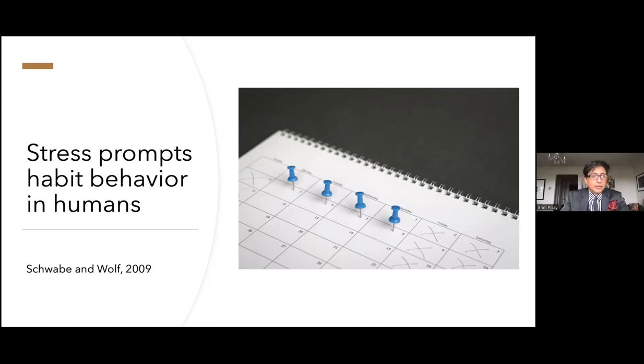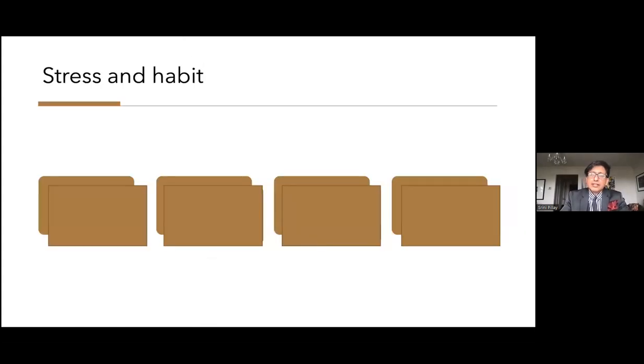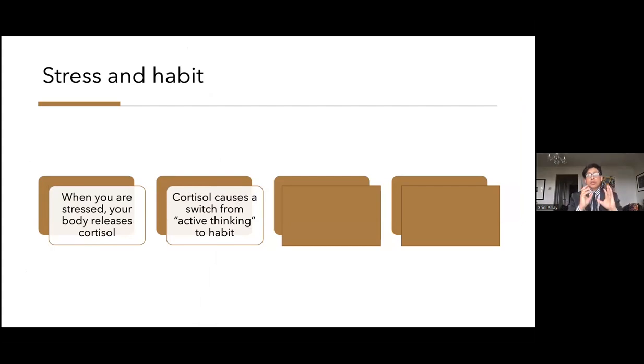Distress is the thing that prompts this habit behavior in humans, and people will go back to doing exactly what they were doing before the evaluation. If you look at stress and habit, what you'll see is that when you are stressed, your body releases cortisol, and this cortisol turns off the active thinking circuit and it turns on the habit circuit.